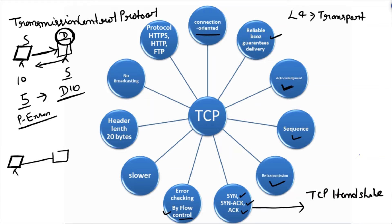TCP is slower because it cares about data acknowledgement. The header length in TCP is 20 bytes, which is bigger compared to UDP because UDP has only 8 bytes. TCP has a larger header because it adds more information to every packet.